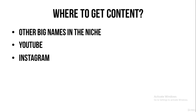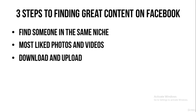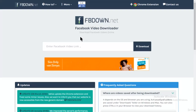The next source is YouTube — if you want to search for interesting viral videos in your niche, just go to YouTube. And if you want good-looking photos about your niche, go to Instagram. There are three steps to finding great content from other Facebook pages: first find someone in the same niche, then search for their most liked photos and videos, and then download and upload it to your page. Let me show you how to do that. I want to show you the website we'll use to download videos from Facebook — it's fbdown.net.